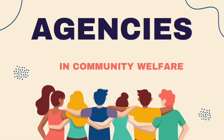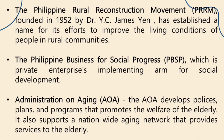Hello everyone, my name is Nicole. The next topic that I will discuss will be the Agencies in Community Welfare. First is the Philippines Rural Reconstruction Movement, or PRRM, founded in 1952 by Dr. James Yen. It has established a name for its effort to improve the living conditions of people in rural communities through an integrative program of livelihood, health and nutrition, education and training, and self-government.